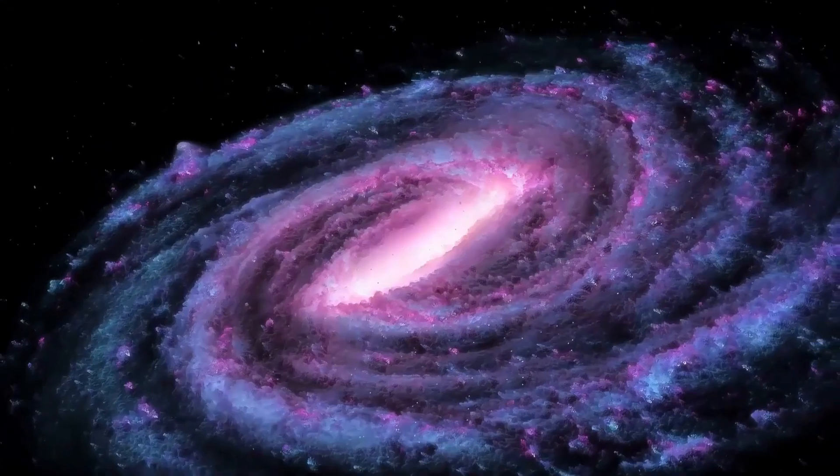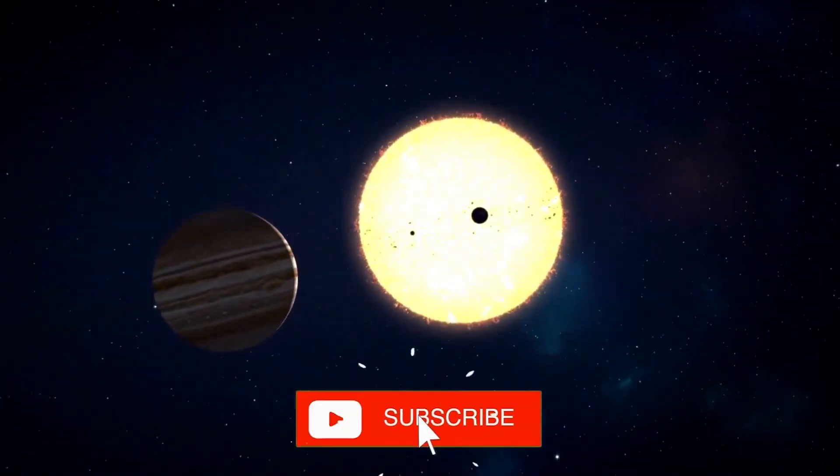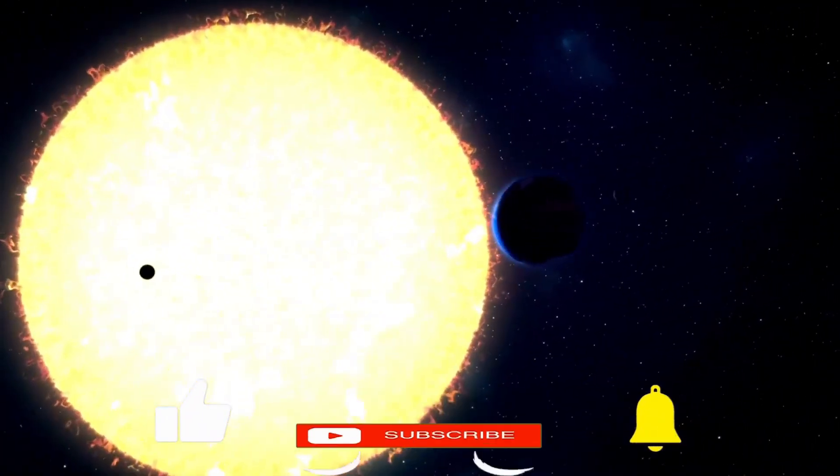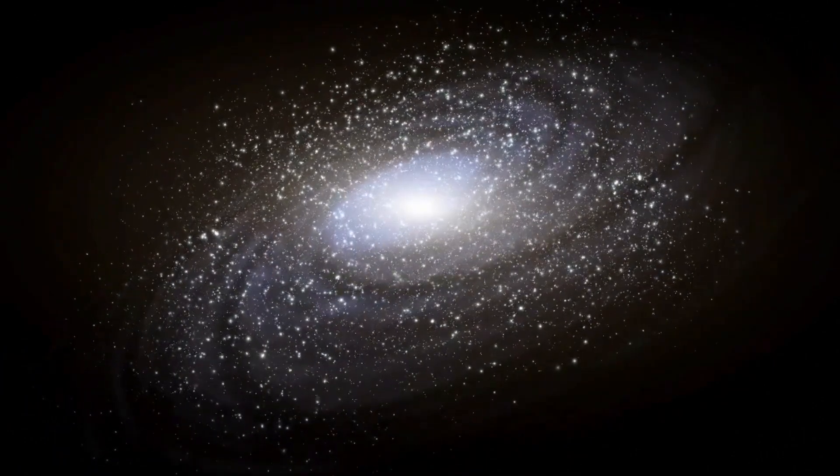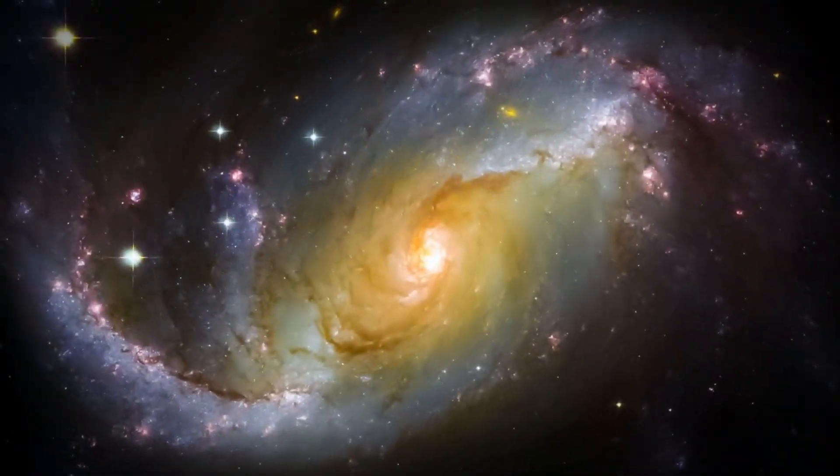Of all the exoplanets known so far, none arouse as much interest as Proxima b. As mentioned before, the star orbiting this exoplanet is Proxima Centauri, a very cold red dwarf with a surface temperature of 2,872 degrees Celsius, eight times less massive than the Sun and 500 times less bright.